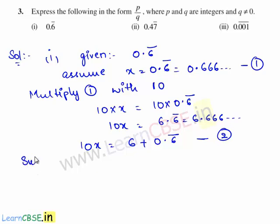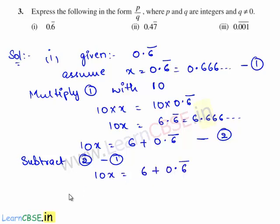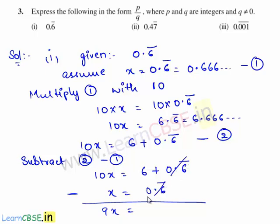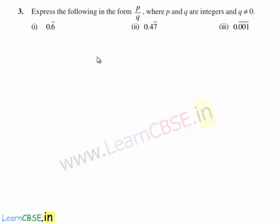Now we shall subtract equation 1 from equation 2. So 10x minus x gives 9x, and 0.6 bar gets cancelled, leaving us with 6. Therefore 9x is equal to 6, which gives x is equal to 6 by 9. Since 6 and 9 are multiples of 3, we cancel out the common factor and are left with 2 upon 3.